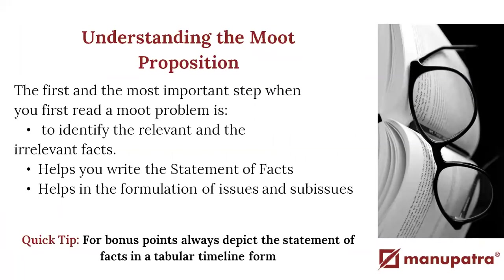First and foremost, understanding the moot proposition. The first important step is to read the problems and identify the relevant and irrelevant facts. For example, if the problem discusses a lot about the family life of an individual who then commits contract fraud, you have to evaluate what facts are relevant to his behavior in the contract fraud and what are irrelevant facts just presented to make the problem fuller. Making this distinction cuts down the material you need to work through to understand your moot proposition, frame your moot memorial, channel your arguments, and build your compendium.